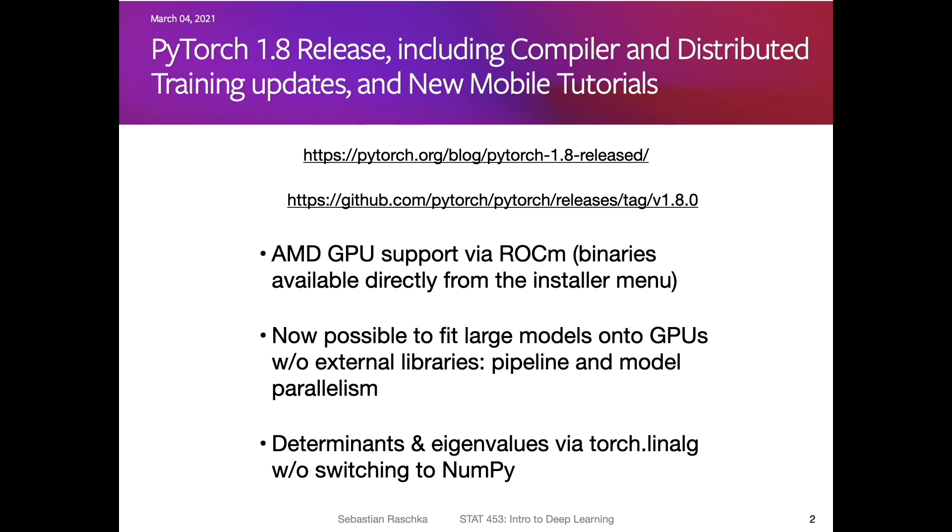Probably the coolest thing that happened in the context of deep learning this week was that there was a new PyTorch release. I usually cover new versions that come out, maybe every half a year or so, because there are usually a lot of cool new features and improvements that are useful in practice. Since this class is also focused on PyTorch, I thought it might be worthwhile mentioning some of these new additions. There's an article that they put together with the highlights in this new 1.8 release.